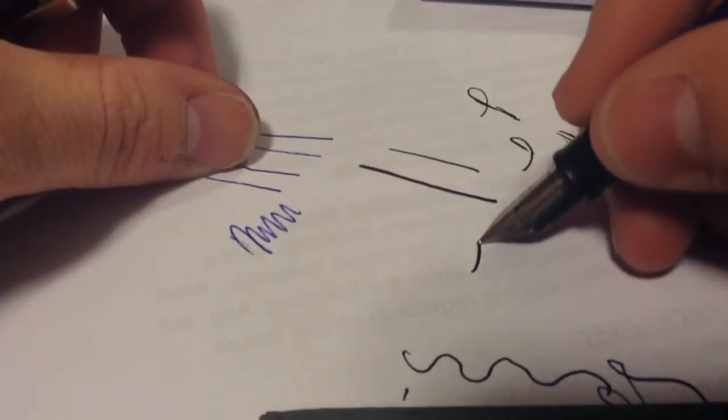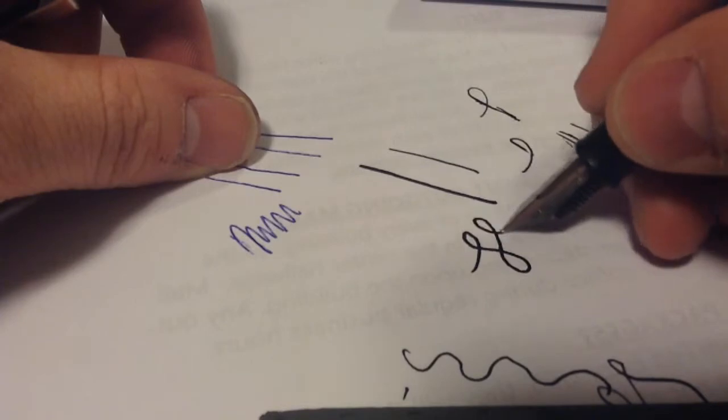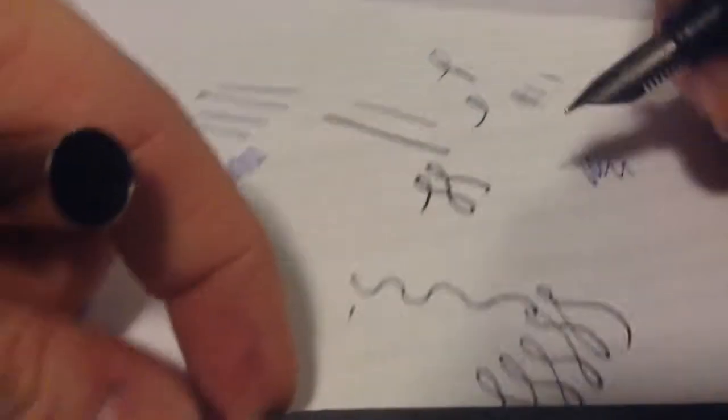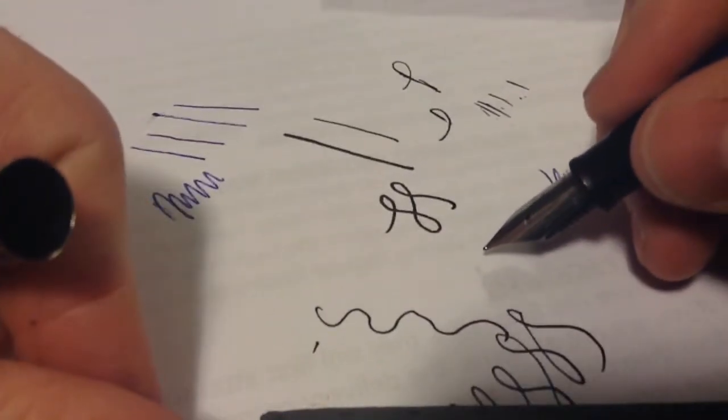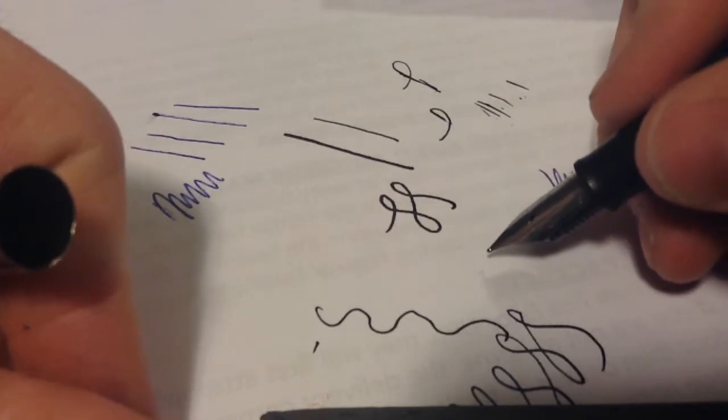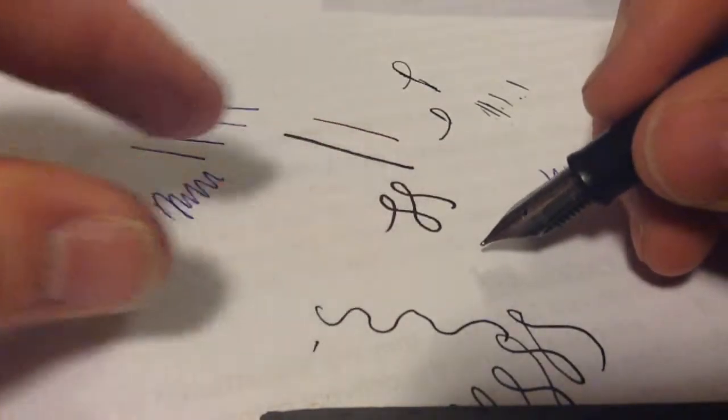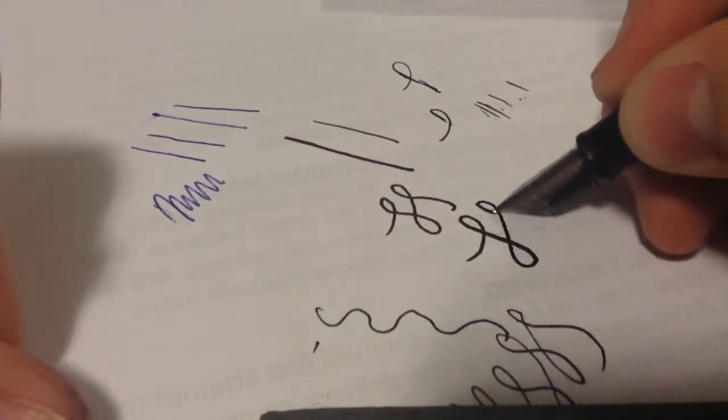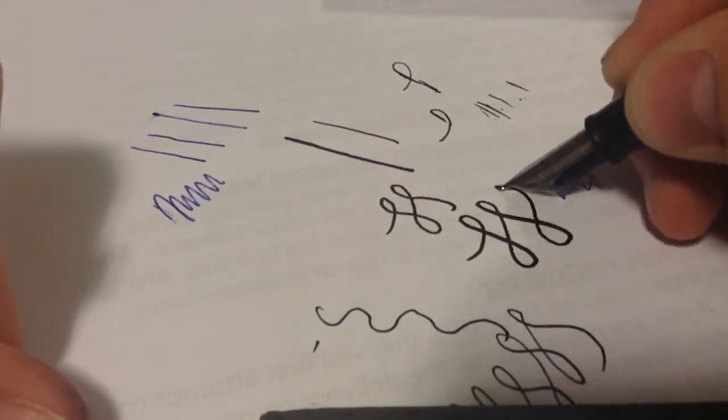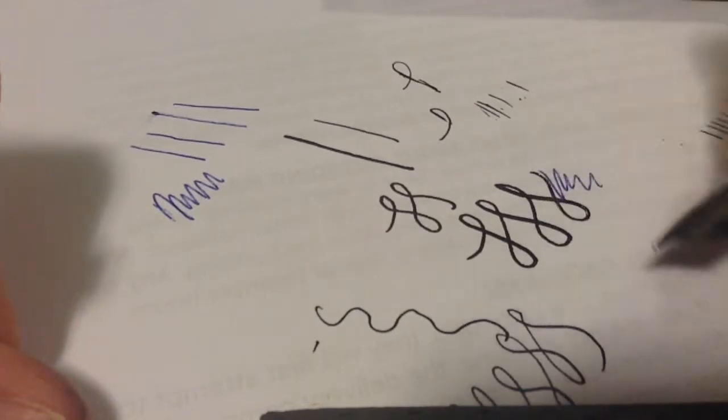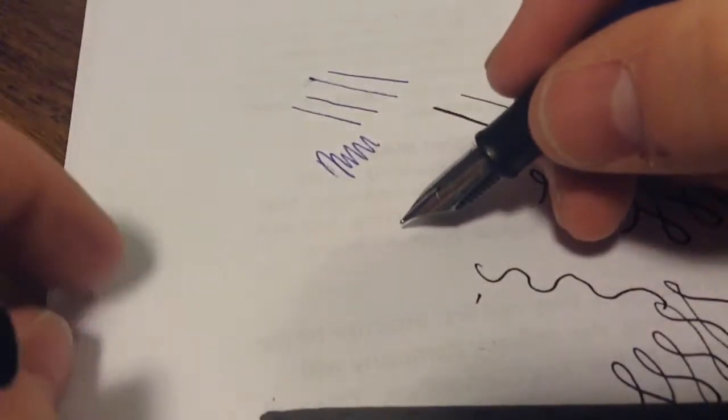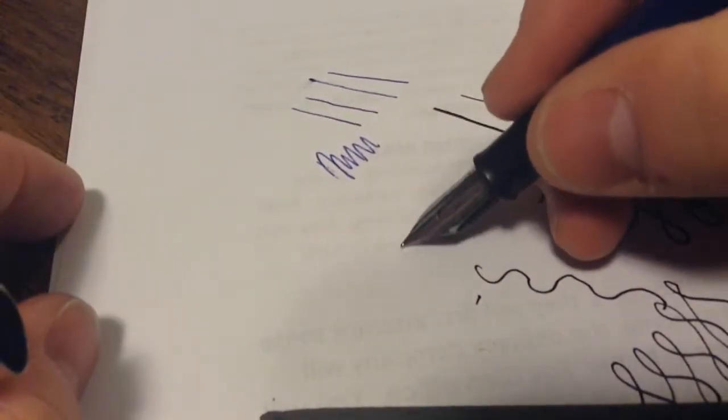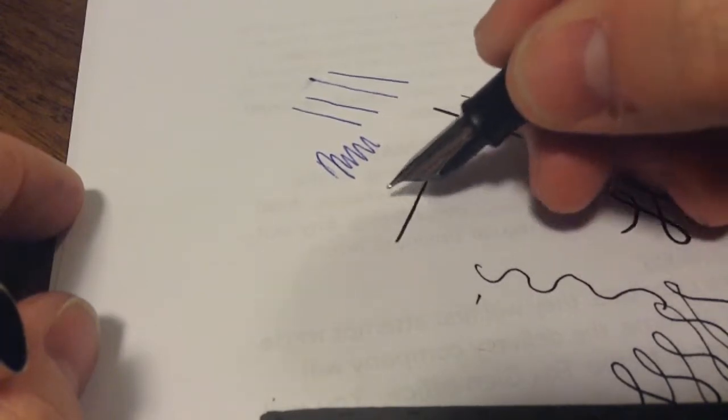So, when you go light, you're going to get the standard nib. No variation. And then, when you press harder, it'll flex out and make the line wider. So, you can see how wide that is. So, I'm going to go light and then wide.